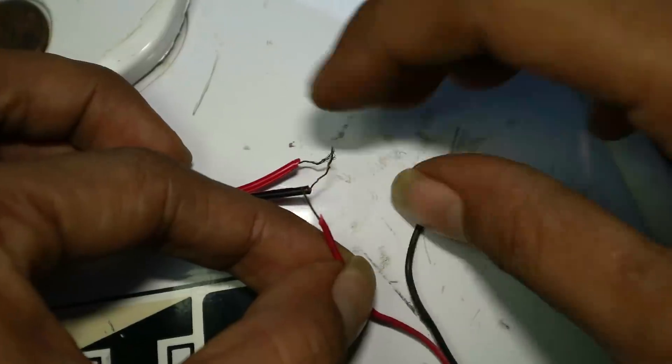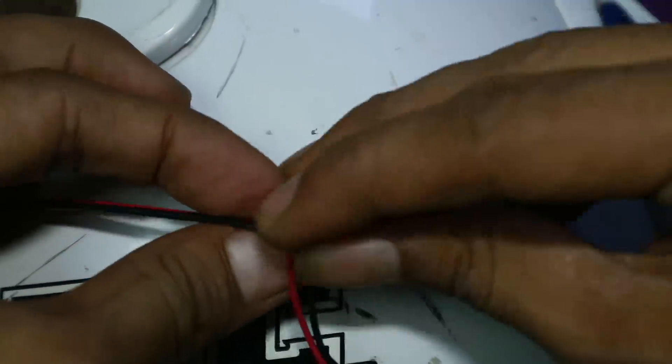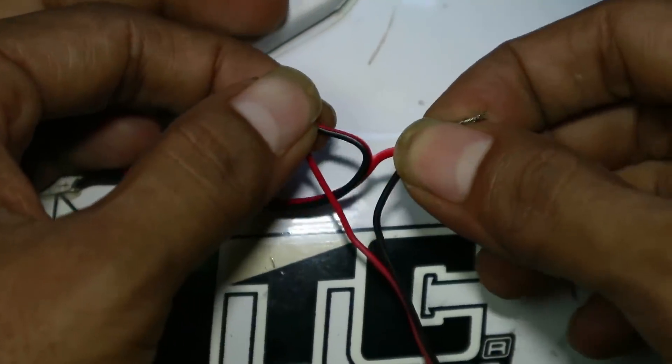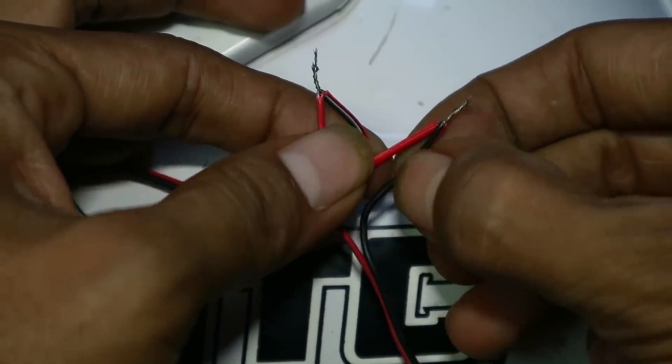Untuk penyambungan, maka negatif LED satu dapat positif LED yang lainnya. Negatif dapat positif, positif dapat negatif yang LED yang sebelahnya.